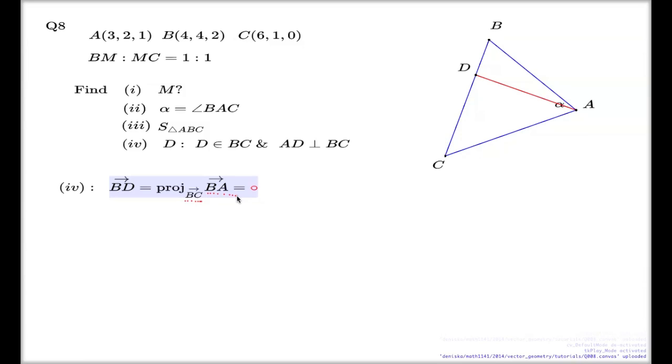The formula says this: we have to dot product BA and BC. We have to divide this by the square of the length of BC, and we have to multiply this or scale BC with this number. This is our T0 from the previous discussion.